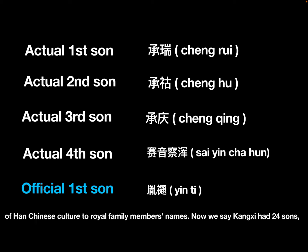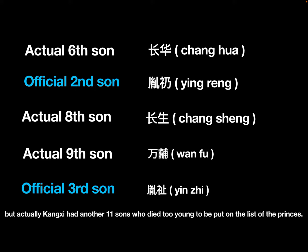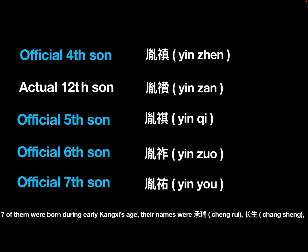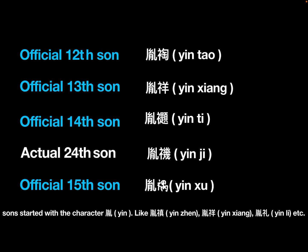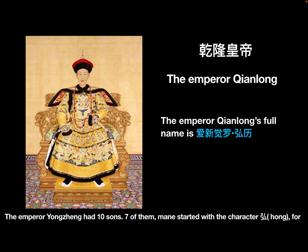Kangxi had 24 officially recorded sons, but actually he had another 11 sons who died too young to be put on the list of princes. Seven of them were born during early Kangxi's reign. Their names were Cheng Rui, Chang Sheng, Sai Yin Cha Hun, etc. Starting from Kangxi's officially third son, the first names of Kangxi's sons began with the generation character Yin, like Yin Zhen, Yin Xiang, Yin Li, etc.